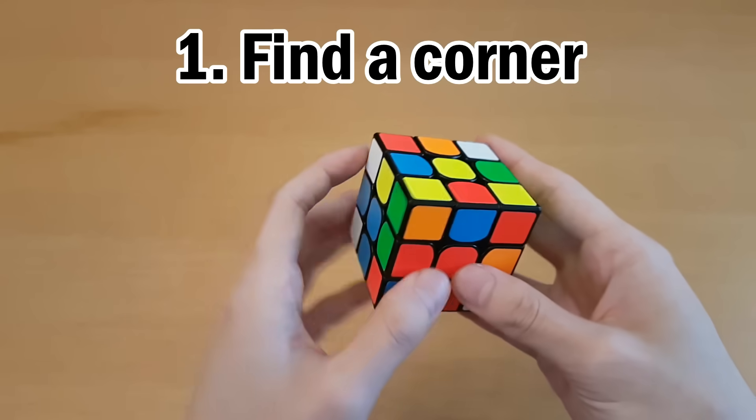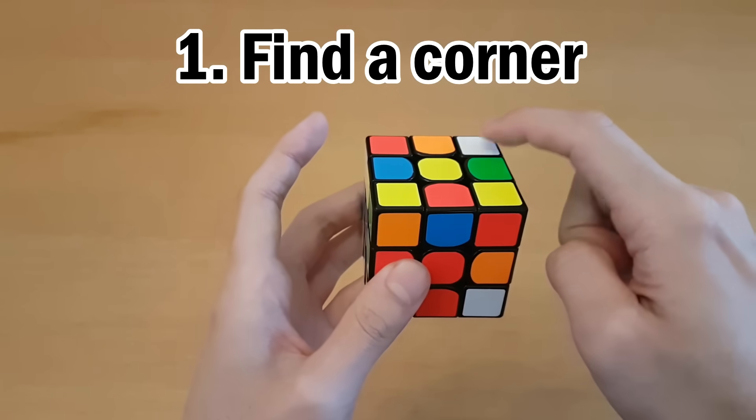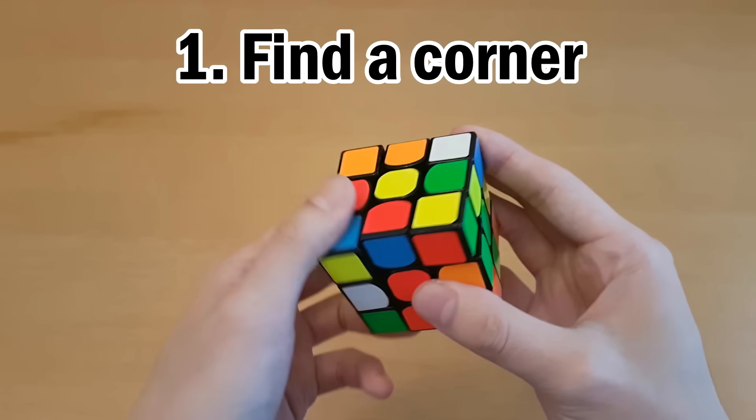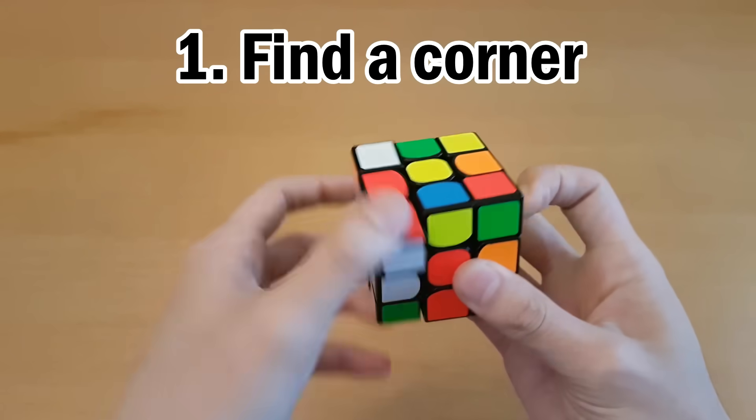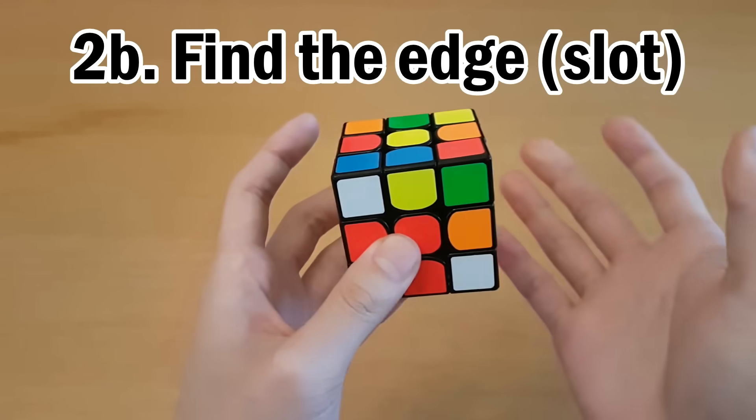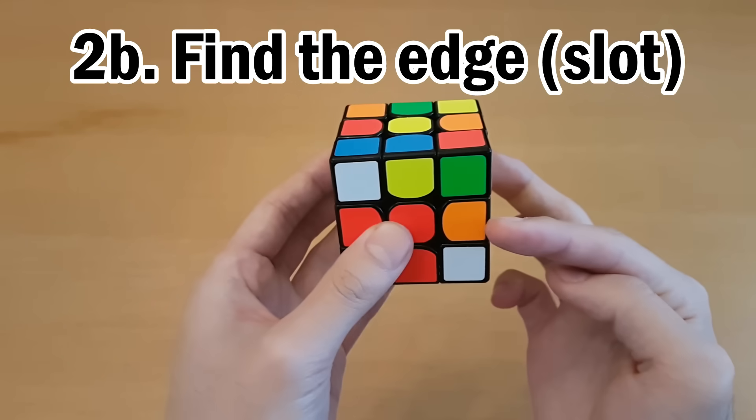So that was the simple case they were all in the top layer. So now I'm going to solve the same one, the corner, same corner, is right here, and this time I don't see its corresponding edge anywhere. And so if it's not in the top layer, it's got to be in one of these slots, so that's where you're going to look next.